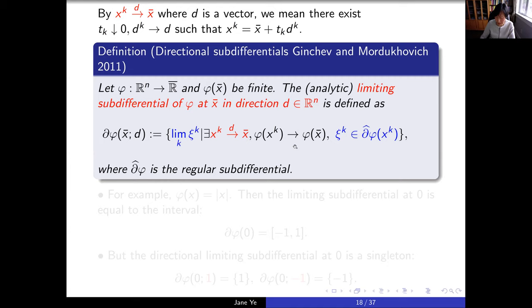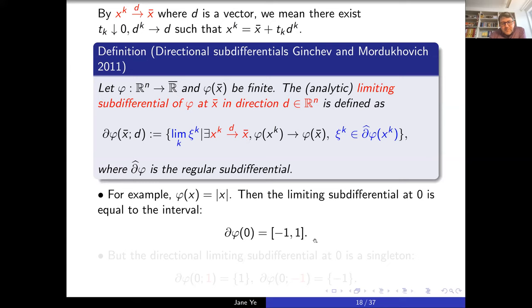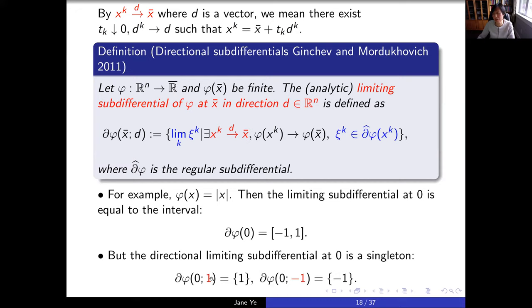Consider the absolute value function as an example. The standard limiting subdifferential at zero is the interval [-1, 1]. But if we use the directional version and approach zero from the right (direction d = +1), we get just {1}, and if we approach from the left (direction d = -1), we get just {-1}. This is a much smaller set than the full subdifferential.